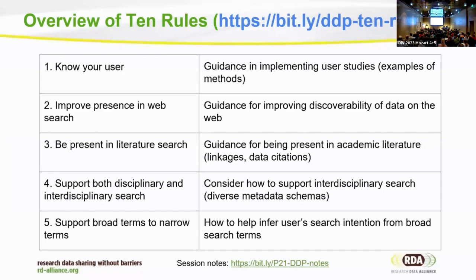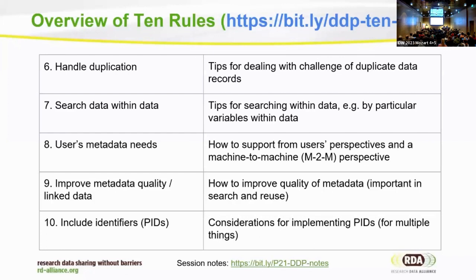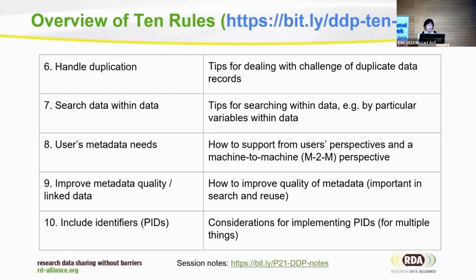We also need to support searching from broader terms to narrower terms — for someone who knows the field and someone who doesn't. There's also the issue of duplication: nowadays repositories harvest from each other, so users searching multiple repositories encounter the same record again and again. How do we handle that? And for big datasets, how do we search data within data? We also need to know what data attributes are most important to the user community being served.